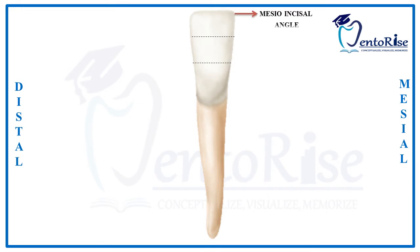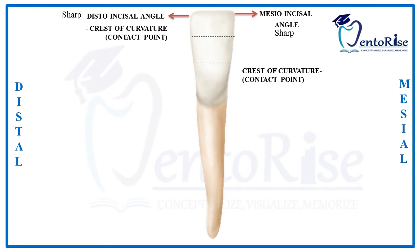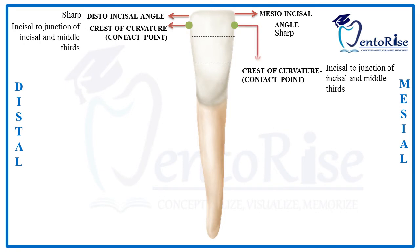The mesio-incisal angle for a permanent mandibular central incisor is sharp, and so is the disto-incisal angle. This is in contrast to the maxillary incisors wherein the mesio-incisal angle was sharper compared to the disto-incisal angle, which was much more rounded. The crest of curvature or contact point is present incisal to the junction of incisal and middle thirds of the crown, i.e., in the incisal third of the crown.